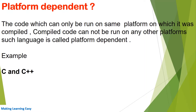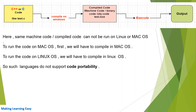Examples of platform dependent languages are the very famous C and C++. Let's understand this with an example. At the top there is a screenshot showing your source code in C or C++, the file name is test.c. You compile this code on the Windows operating system, and after compilation you get the compiled code — also called machine code, binary code, object code, or test.exe executable file. You then execute this code on the same Windows machine and get the output.